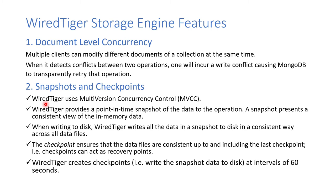WiredTiger uses MVCC — Multi-Version Concurrency Control — meaning a consistent snapshot of the data remains available in memory while another copy is being modified and written to disk. Checkpointing is the process of writing persistent, consistent data across all data files on disk. A checkpoint acts as a recovery point, ensuring all data up to that point is saved.